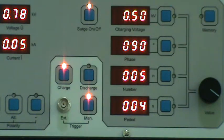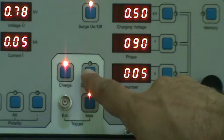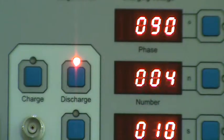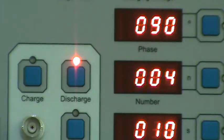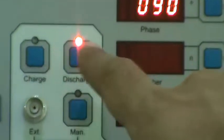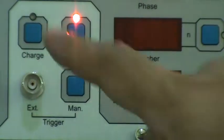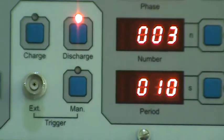To pause the surge test, we need to just press this button, discharge button one time. The test will be paused. And if we press again charge, test will start from the position where it is paused. Now test will start continuing.